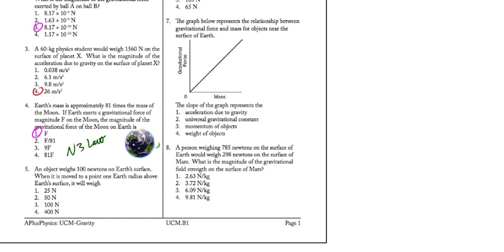Number 5. An object weighs 100 newtons on Earth's surface. When it's moved to a point one Earth radius above Earth's surface, it will weigh what? Well, we're doubling R, and since this is an inverse square law, if we double R, then we're going to get a force that's 1 fourth, that's quartered, 25 newtons.